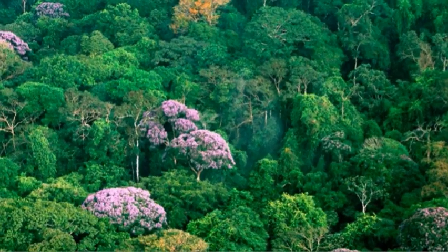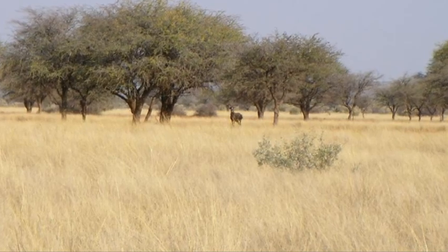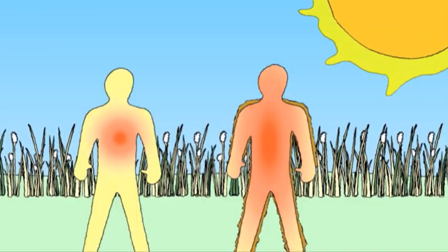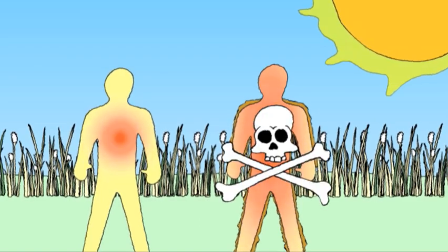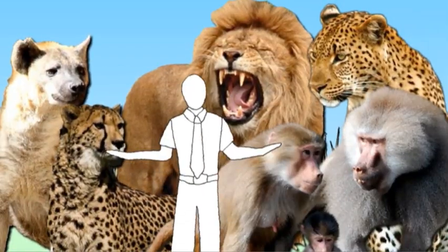Another theory says we lost our fur when our ancestors ditched the forests to hang out on the savannah around 1.7 million years ago. Overheating would have been a real danger, so those with less fur might have had a better shot at survival. But plenty of animals on the savannah kept their fur, so it's clear this mystery is yet to be solved.